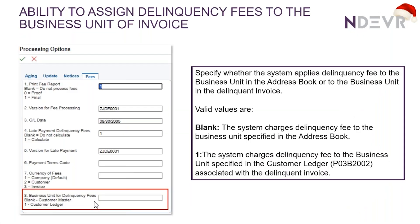On the delinquency fees, you can now choose whether you want to use the business unit of the invoice to charge the delinquency fees to, or whether you want to use — as before — the business unit from the address book. Basically there's an additional processing option under the fees tab on the delinquency fee generation program, and you just decide with a blank or a one where you want to pick up the business unit for the delinquency fees from.